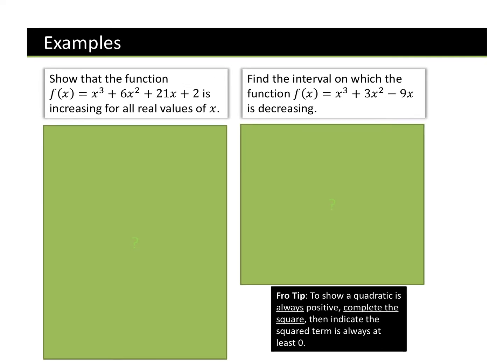Here are two types of example questions we might get about increasing or decreasing functions. It says show that the function is increasing for all real values of x. If it's increasing, we want to show that the gradient function is greater than or equal to zero. If it was strictly increasing, it would be just greater than zero. But because it says increasing, it's greater than or equal to zero.